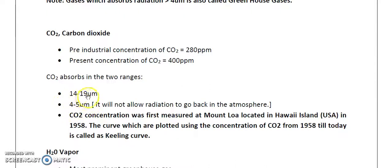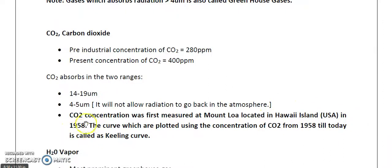To keep in mind: CO2 absorbs at 14 to 19 micrometers and 4 to 5 micrometers. The 4 to 5 micrometer band does not allow radiation to escape back into the atmosphere. Also, CO2 concentration was first measured at Mauna Loa Observatory, located in Hawaii, USA, in 1958.